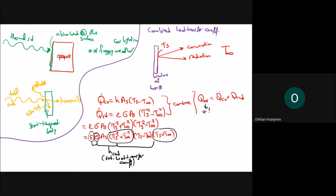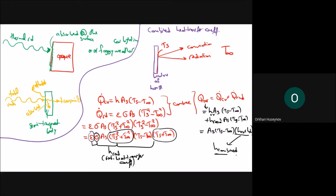The total heat transfer then becomes: (h_cv plus h_radiation) times A times (T_s minus T_infinity), which defines the combined heat transfer coefficient h_combined. In most problems, when a combined heat transfer coefficient is given, it accounts for both convection and radiation.